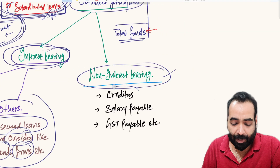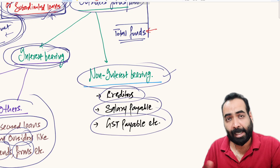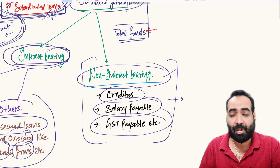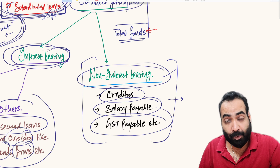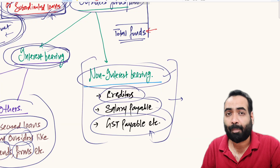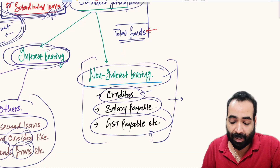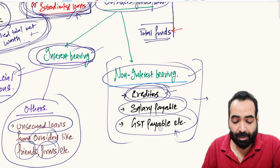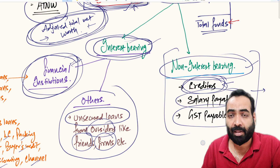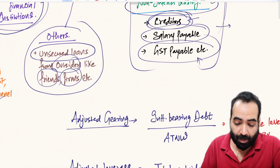The second category is non-interest bearing debts. Examples include creditors, salary payable, expenses payable, statutory dues payable, TDS payable, and GST payables. These are amounts where there is no primary condition of paying interest. You may have to pay interest if you delay depositing GST or TDS, or if you pay creditors late, but that does not make them interest-bearing liabilities. An interest-bearing liability is one where the prime feature is that interest is charged for every rupee lent.